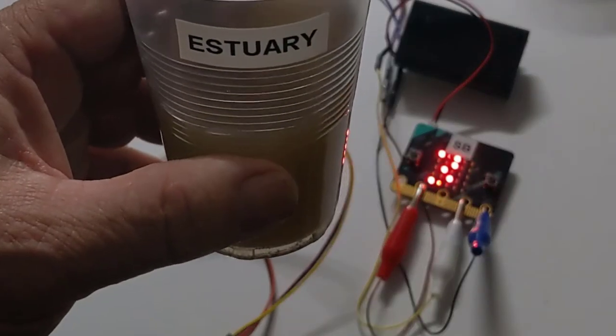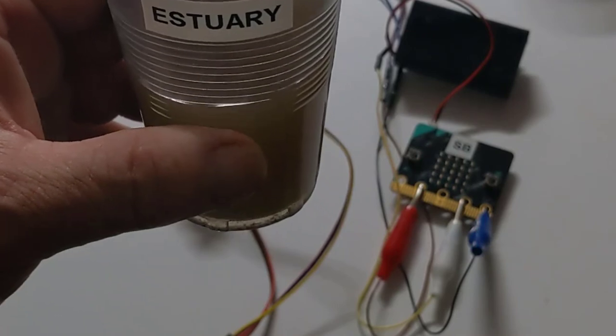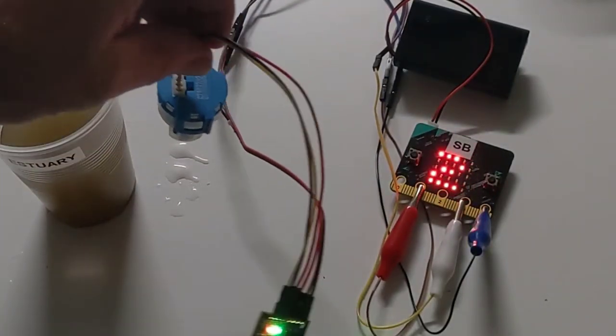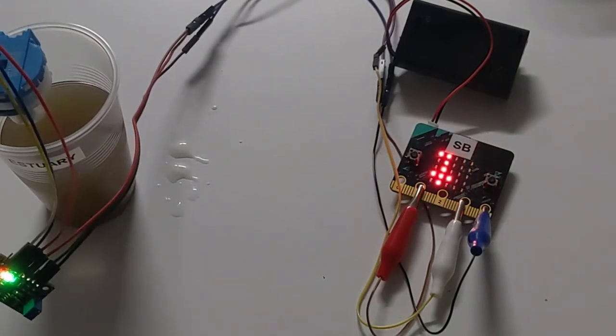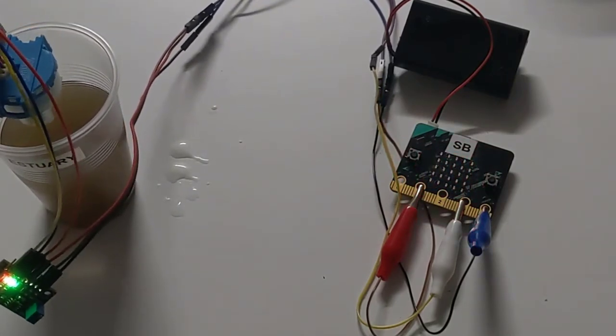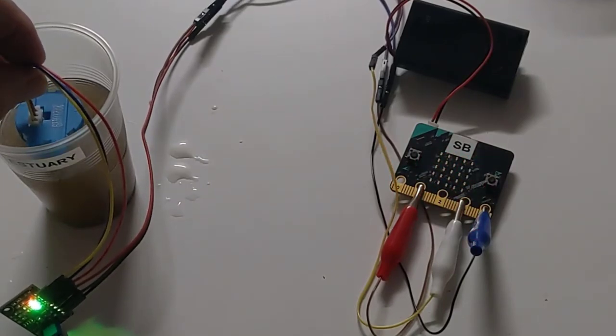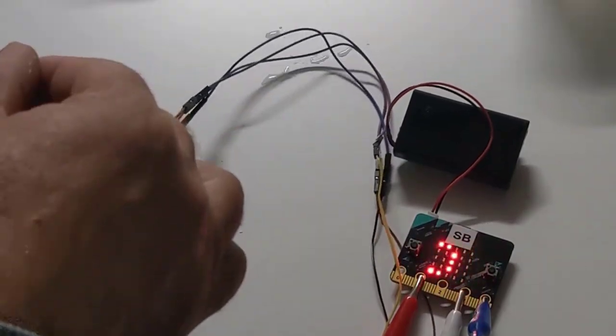So here I have some estuary water. And I'll test the value of that. And it should be somewhere between the six of the milk and the 706 of the demineralized water. So I'll place that in. Let it get a new reading. 171. Again, I'll wash that out.